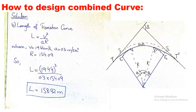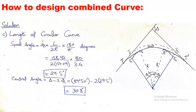The next parameter is the length of the transition curve. The length from E to T is the transition curve length, represented by capital L, and the formula is L = V³/(AR), where V is the design speed, A is the rate of change of acceleration (given as 0.3 m/s²), and R is the radius of the circular curve. Substituting these values gives L = 158.92 m, which is the length of the transition curve.